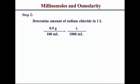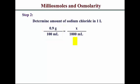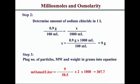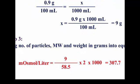Step two: determine the amount of sodium chloride in one liter of solution. A 0.9% strength means 0.9 grams in 100 mL. We want to find how much is in 1000 mL (one liter). Setting up a proportion, we solve for the unknown and get nine grams per liter of solution. Step three: plug the values into our equation — nine grams per liter divided by 58.5, multiplied by two particles, multiplied by one thousand — and we get 307.7 milliosmoles per liter.